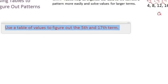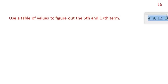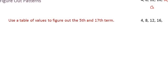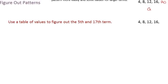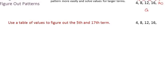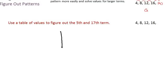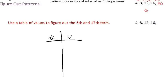So let's use a table of values with the same data. Use a table of values to figure out the 5th and 17th term. I'm going to start off by creating my table — your basic looking T-table. I'm going to label this column "term number" — I'll just put a number sign — and the other column "term value," since we have no context, just numbers right now.